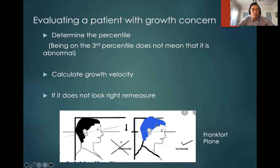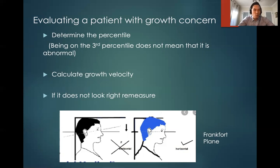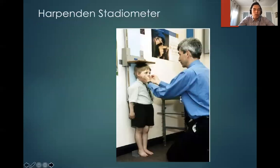If it does not look right, always remeasure. This picture shows the correct posture for height measurement — it's called the Frankfurt plane. You must have the eye and ears in the same plane with the vertex on top. If a height measurement does not look right, remeasure. There is also a machine called the Harpenden stadiometer, which is a very accurate measurement tool for height.